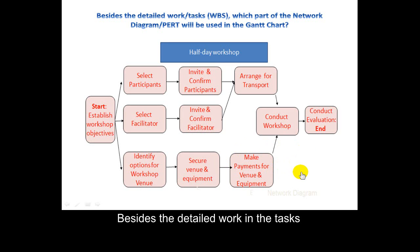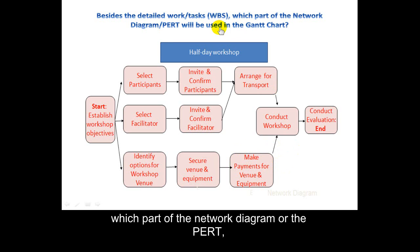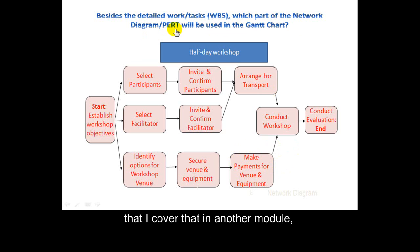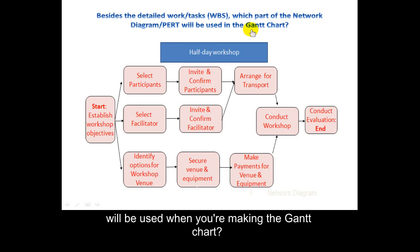Besides the detailed work and tasks that come from the WBS, which part of the network diagram or the PERT — covered in another module — will be used when you're making the Gantt chart?